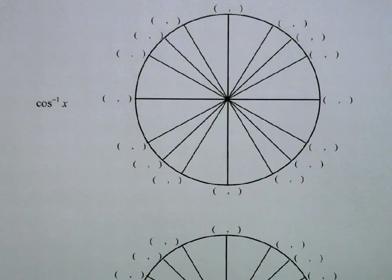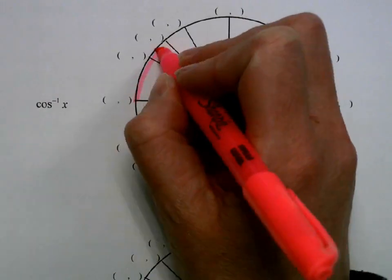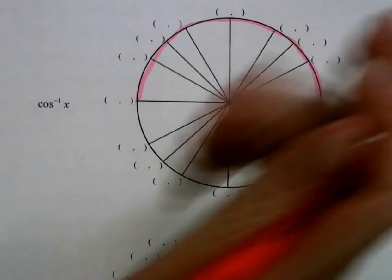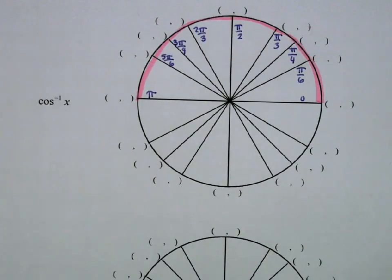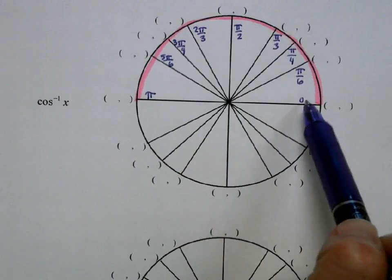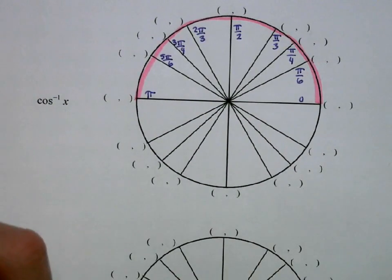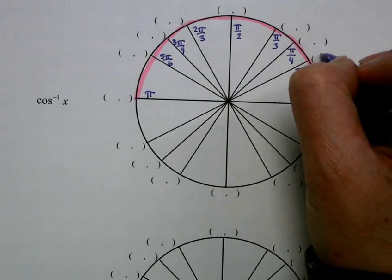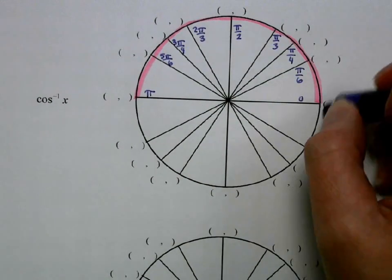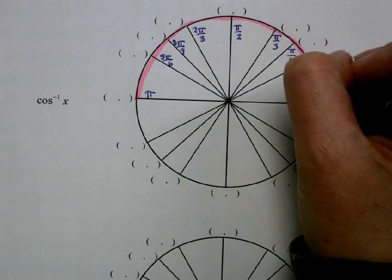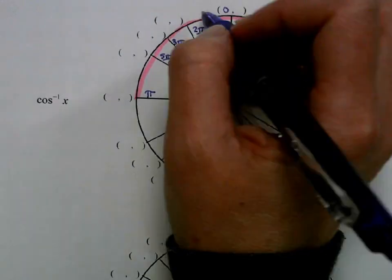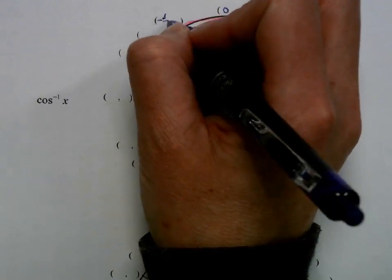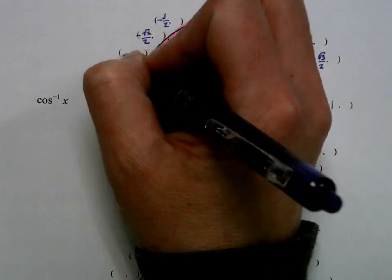For cosine, our outputs are going to be the values between 0 and pi — that's just the top half of the unit circle. We label those angles from 0 through pi and look at our x-coordinates: 1, root 3 over 2, root 2 over 2, 1 half, 0 — and then in quadrant 2: negative 1 half, negative root 2 over 2, negative root 3 over 2, and negative 1.